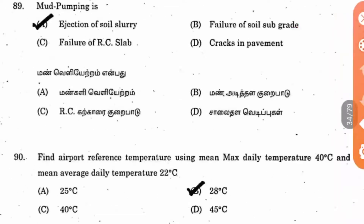Question 89: Mud pumping is what? It is the ejection of soil slurry. When there is downward pressure below the pavement — in the base course or nearby — the soil in that area is pumped up towards any joint or crack present in the pavement. When soil particles from the base course come out of the road, we call it mud pumping.